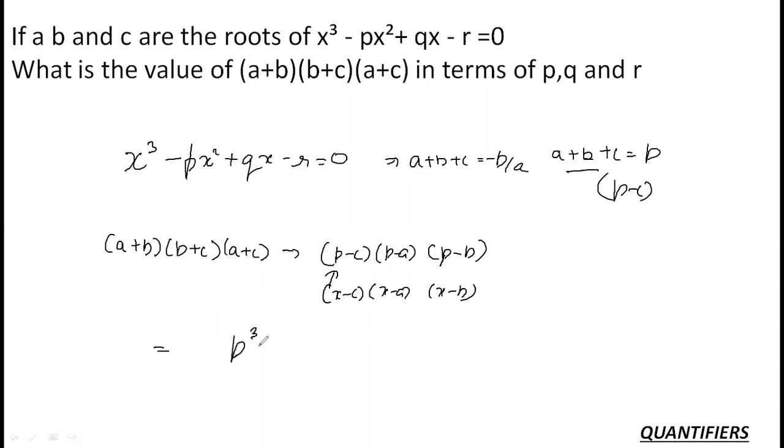So, my equation becomes pq minus p into p square plus qp minus r. So, pq minus pq is cancelled and my answer overall is pq minus r. This is my final answer.